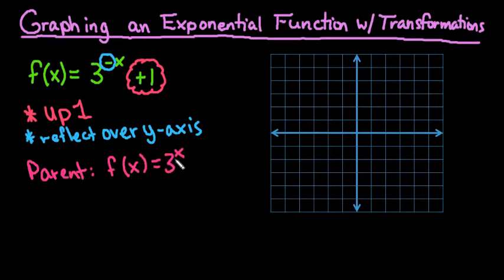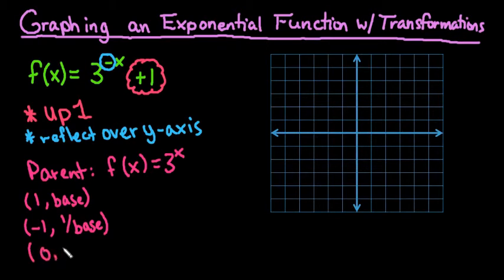And then you can figure out what your original points are. If you remember, the parent function always goes through 1 comma the base. It always goes through negative 1, the reciprocal of the base, so 1 over the base. And it always goes through 0 comma 1.